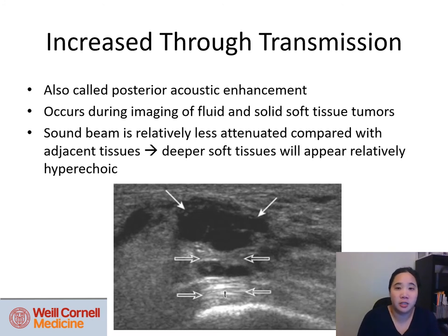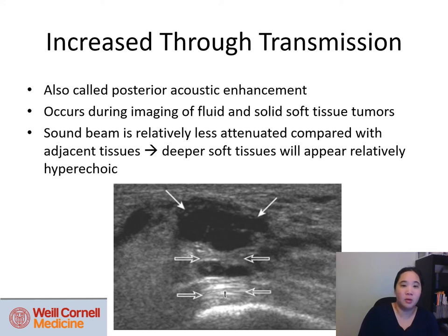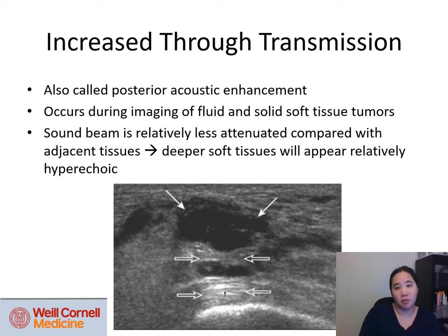Increased through-transmission, also called posterior acoustic enhancement, occurs during imaging of fluid and soft tissue tumors. The sound beam is relatively less attenuated compared with adjacent tissues, so the deeper soft tissues appear relatively hyperechoic. When imaging a fluid-like structure, you can see increased echogenicity below it.